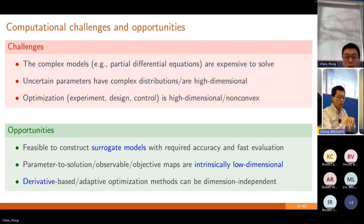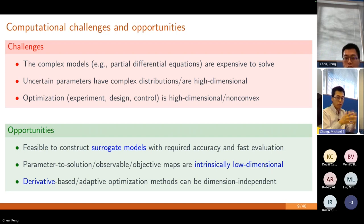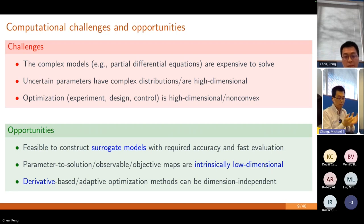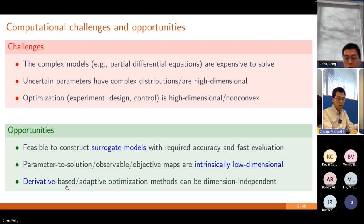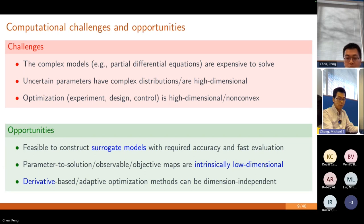The last opportunity is for optimization: for very high-dimensional problems, without using any local curvature or geometric information, it's really hard to explore which parameters are at the minimum or maximum. Using derivative information, geometric information, or adaptive algorithms, we can solve optimization problems fast and independently of the dimension of the optimization variables. These are the opportunities we explore by developing different methods.